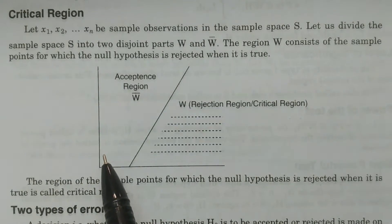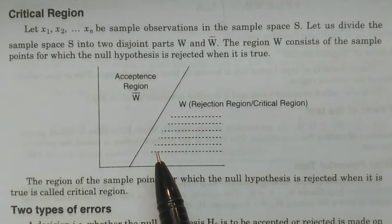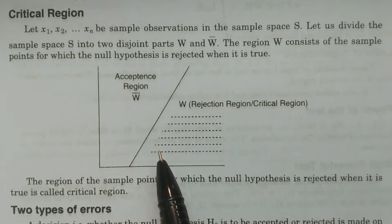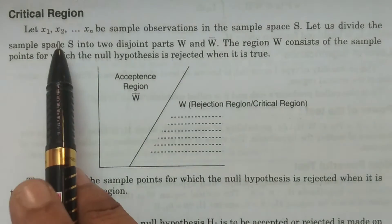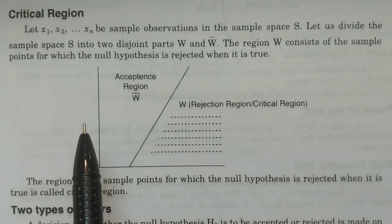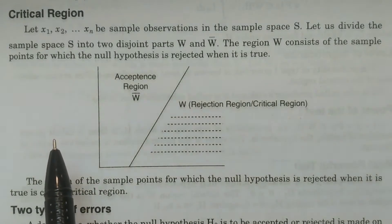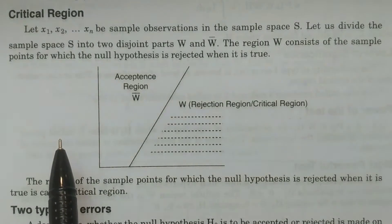This entire procedure is done through sampling. Whatever population statements we have made, all population statements are tested based on the sample observations. That is the reason why we consider x1, x2, and so on, xn — because by considering the sample, we are doing the test procedures, testing the null hypothesis particularly.